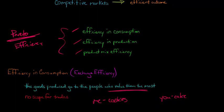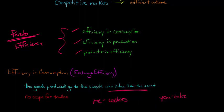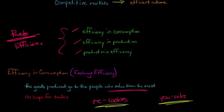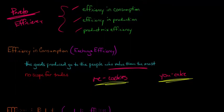Because I value cookies more and you value cake more, we would just make a trade. So when we are at an allocation that is efficient in consumption, there is no further scope for mutually beneficial trades because they've all been exhausted. We've already made the trades. So when I have the plate of cookies and you have the cake, the economy is efficient in consumption.